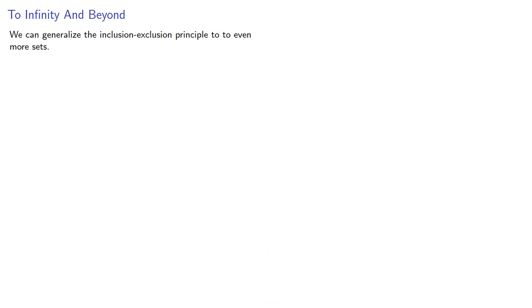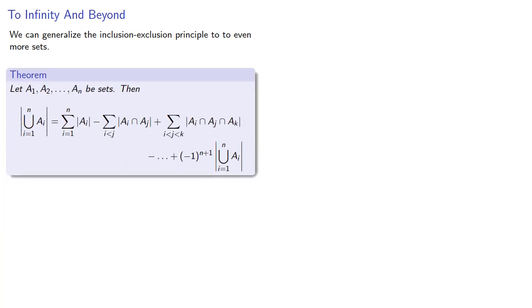We can generalize the inclusion-exclusion principle to even more sets, and this gives us a rather daunting looking theorem. But informally, we'll add the individual sets, subtract the pairs, add the triples, subtract the quadruples, and so on.